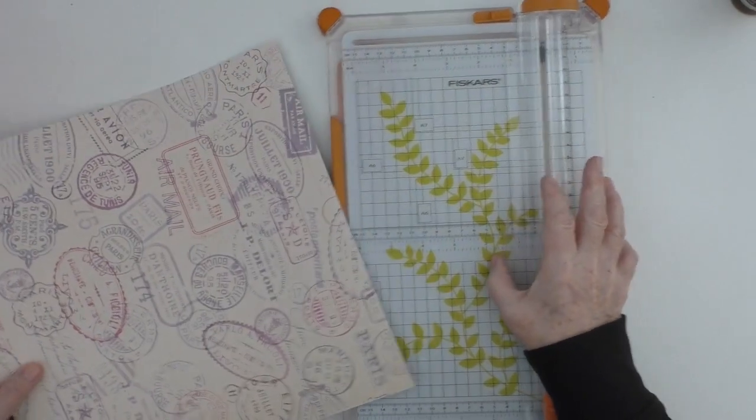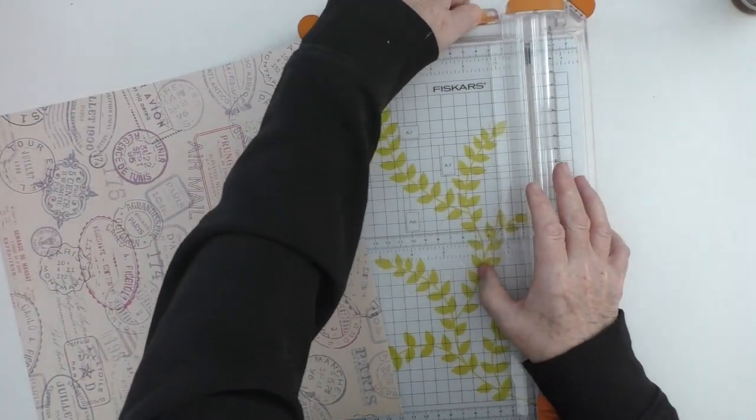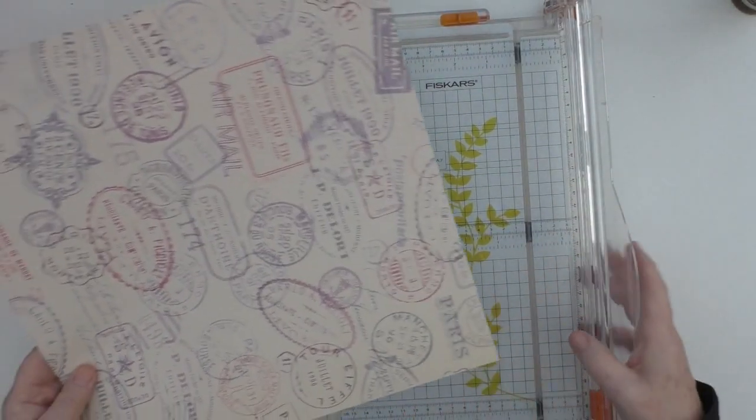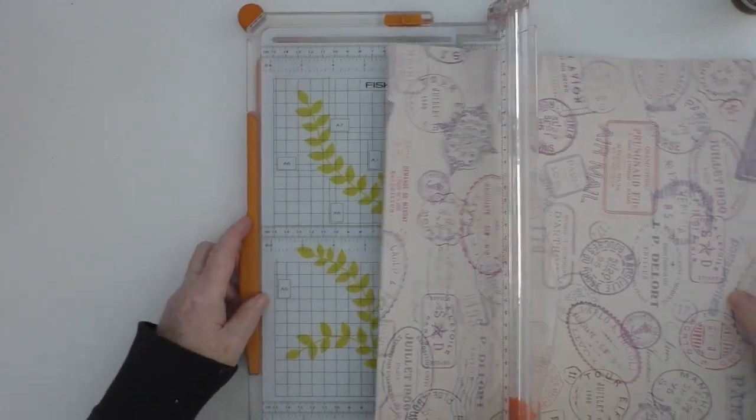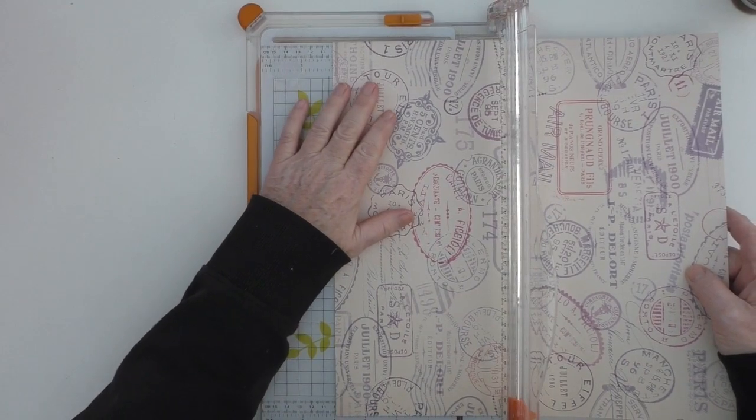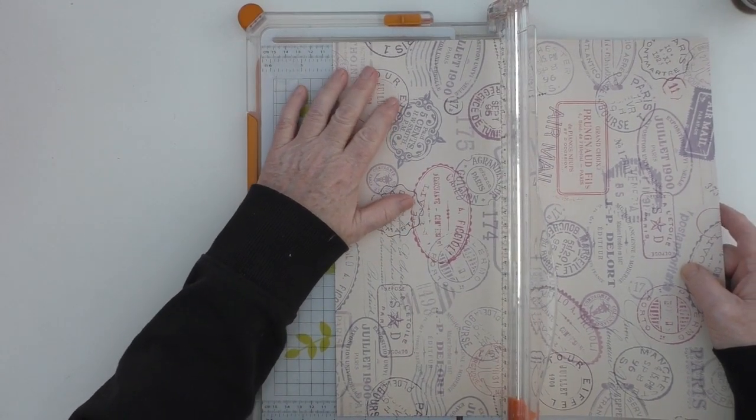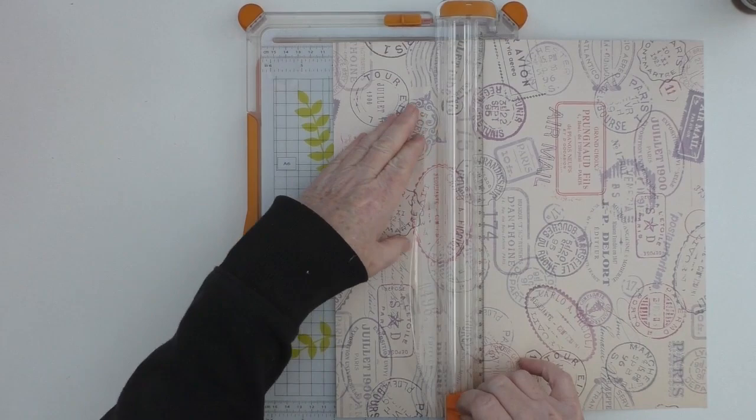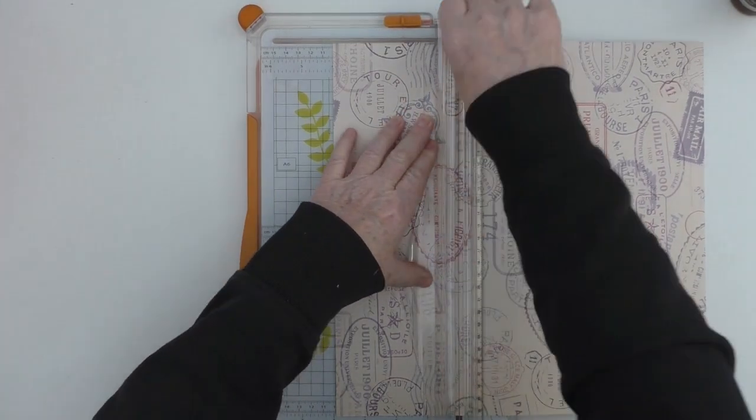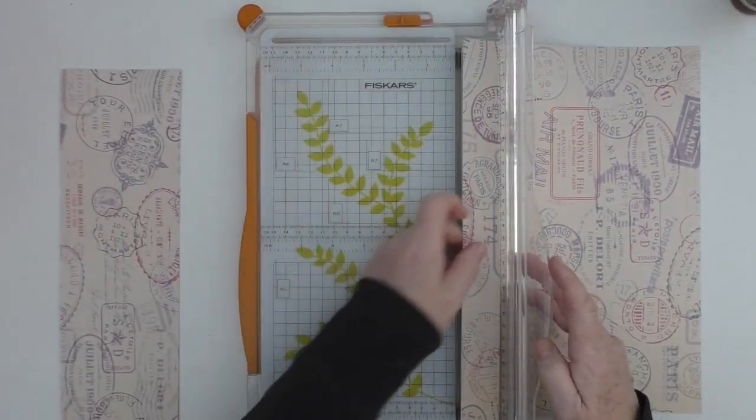Step one, I am just going to take a sheet of 12 by 12 paper and all I'm going to do is cut this at 4 inches. So I will actually get quite a number of journals, journal covers out of this one piece of paper.